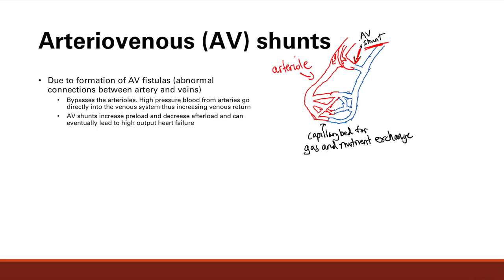What's going to happen is this basically allows you to bypass the arterioles. Remember, the arteriole was the major source of resistance in the vascular system. So you're going to bypass all that. You're going to have high-pressure blood from the arteries going directly into the venous system, straight to the heart. This gives you increased venous return because you bypass that high-resistance area.